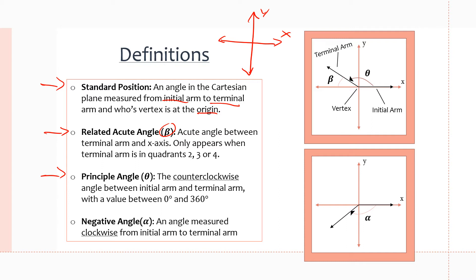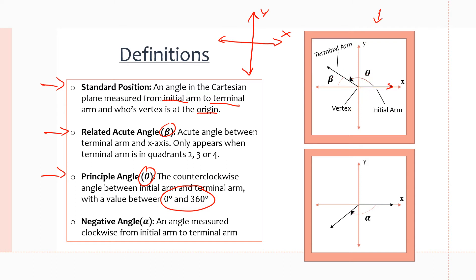The principal angle, represented by theta, is the angle we are measuring — the angle between the initial arm and the terminal arm. It can have a value from 0 to 360 degrees. Looking at the first image, the principal angle goes from the initial arm to the terminal arm, and the terminal arm could be anywhere from 0 to 360 degrees around the Cartesian plane.